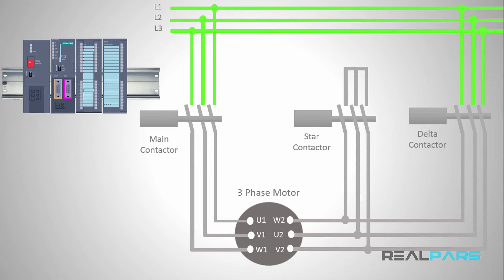For the PLC to be able to control the contactors I need to connect the contactors coils to the PLC's digital output module. I'll connect the main contactors coil to the first output, the star contactor to the second output, and the delta contactor to the third output of the DO module.